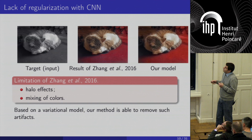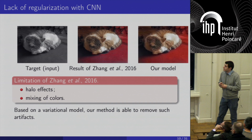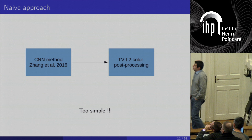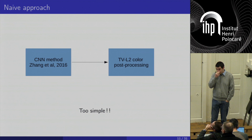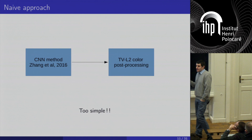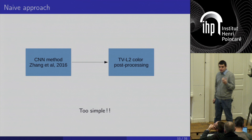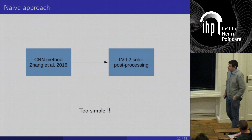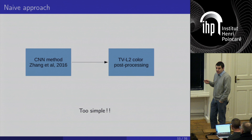I will explain how to proceed. First, using a CNN and then plugging it into a Rudin–Osher–Fatemi model is a naive approach — but in fact it is too simple. It will remove some halo effect, but since the input data contains mixed colors, it won't remove the color mixing problem. To really remove both problems, I need to explain how the CNN of Shang and collaborators works, and explain how to extract data from specific layers of the CNN.